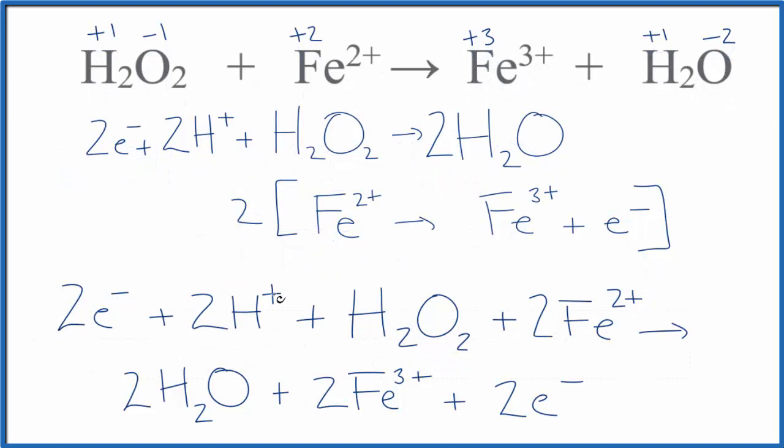So now we can simplify. In the reactants here I see I have two electrons and in the products down here. I have two hydrogen ions. It looks like that's really all we can simplify. Those two electrons there. I'll clean this up. We'll have our redox reaction for H2O2 plus Fe2+.